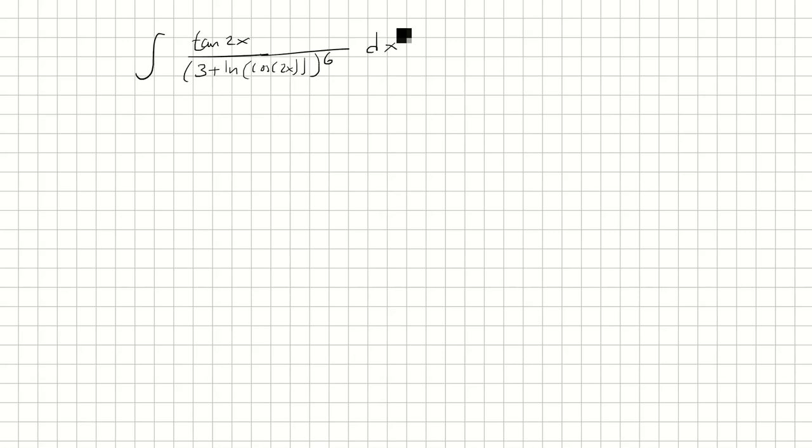For this one, we're going to use a u-substitution. And a good candidate for u is whatever is a base of an exponent and whatever is in parentheses. So that's 3 plus ln of cosine 2x.